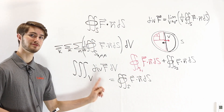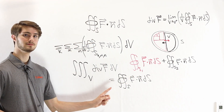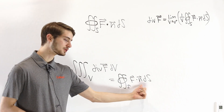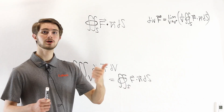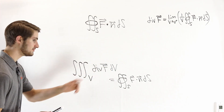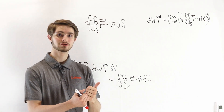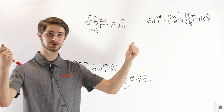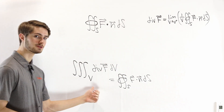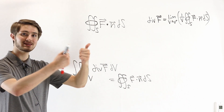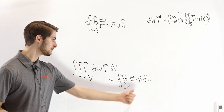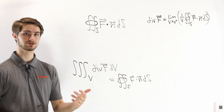That is the divergence theorem. Also remember that this theorem is only true when the normal vector for the surface integral points outward. That makes sense because divergence describes how much a vector field points outward away from a point. So when we integrate over some volume, what remains at the edges is how much the vector field points outward — and the normal vector must account for that.